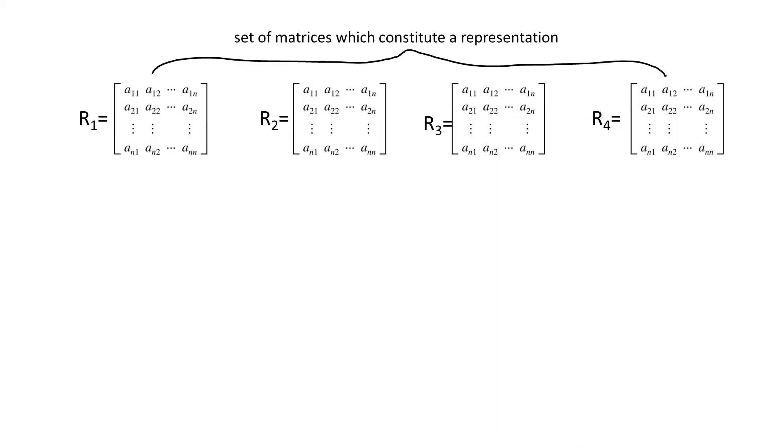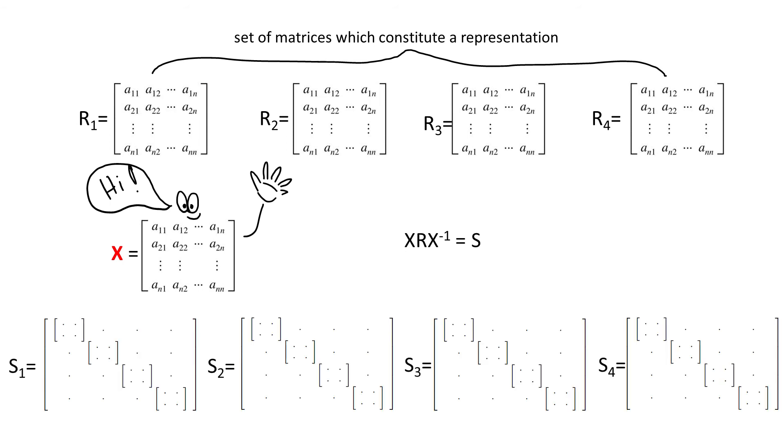So to reiterate, if for a given set of matrices, which constitute a representation, there exists a matrix X which transforms them into the block diagonal form, that means the original set of matrices makes up a reducible representation.